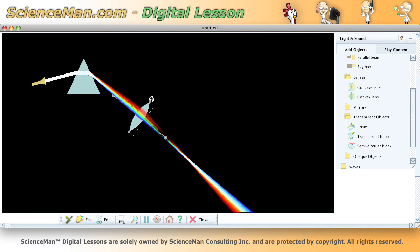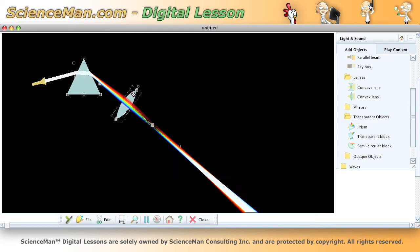And as you can see, we have a beautiful recombination of our spectrum into white light. And that's great proof that white light really consists of all the colors of the spectrum.